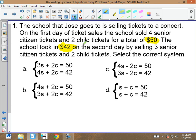The school that Jose goes to is selling tickets to a concert. On the first day of ticket sales, the school sold four senior citizen tickets and two children's tickets for a total of $50.